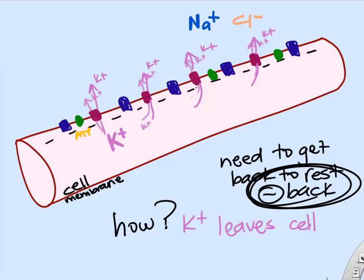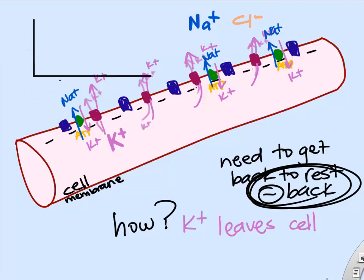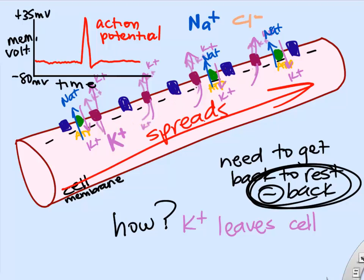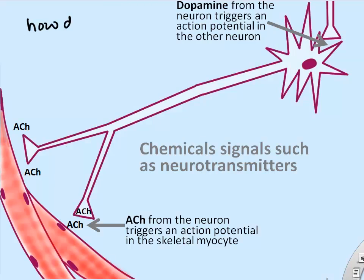Over time, if we measure that membrane voltage, we can see it spike: at rest it's negative, then during an action potential it spikes positive very quickly, and then rapidly returns to negative. Action potentials occur and spread very fast — that positive charge spreads through the entire cell almost instantaneously, and cells use those to signal. The ATP pumps will pump sodium out and potassium back in to prevent sodium from building up and too much potassium from leaving.